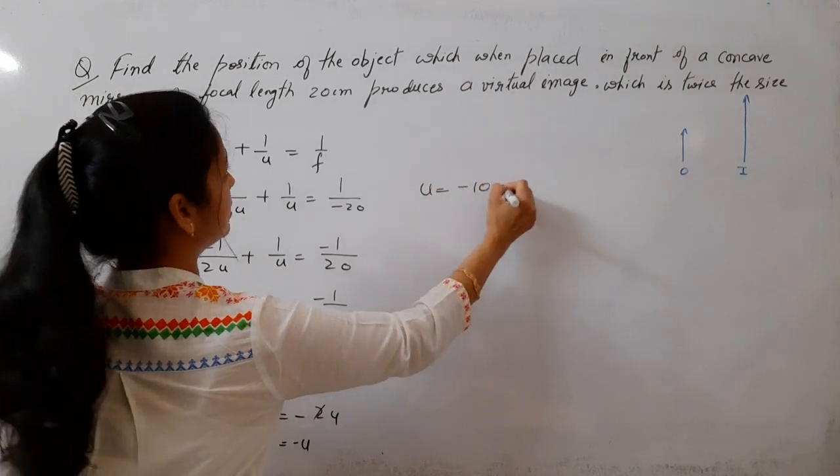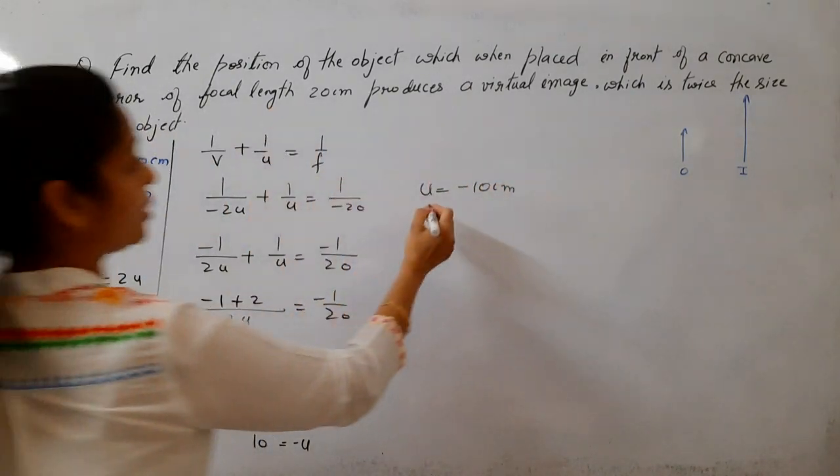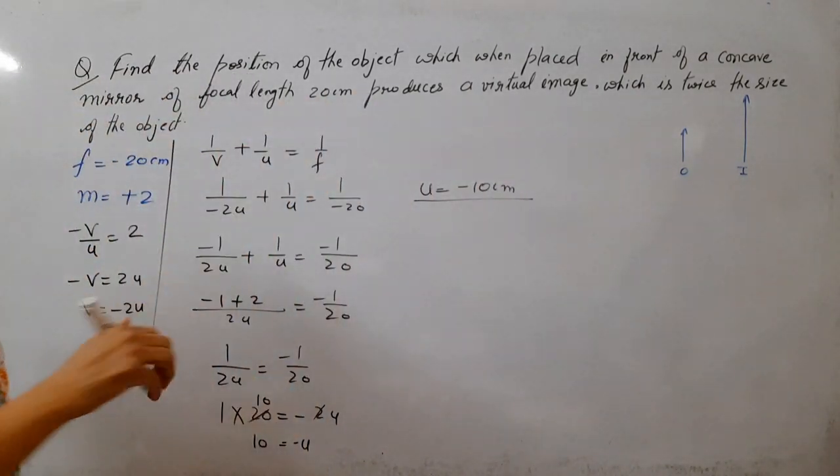So, u is minus 10 cm. Position of object kya hogi? 10 cm in front of the mirror.